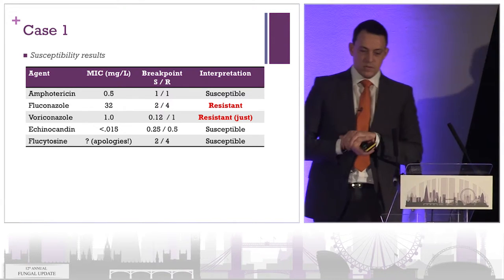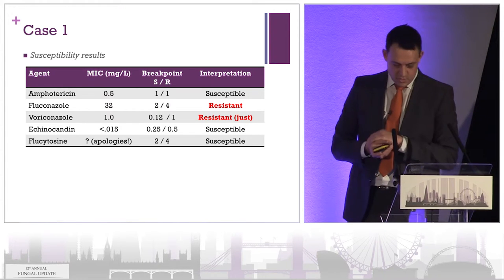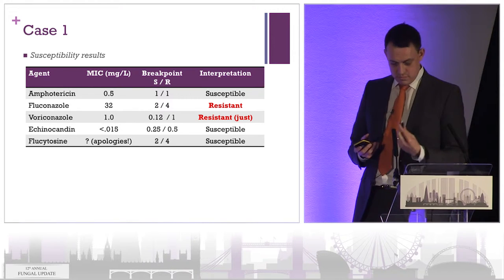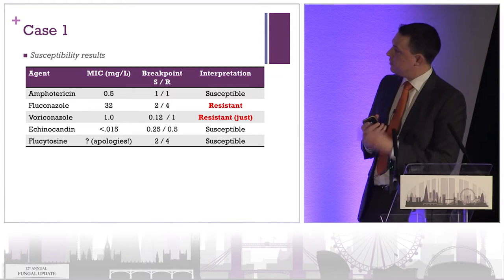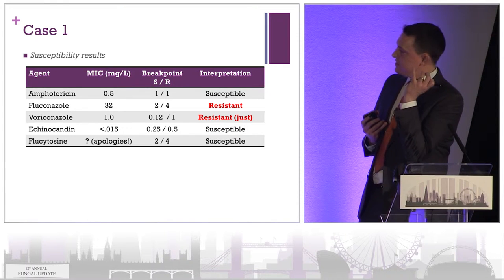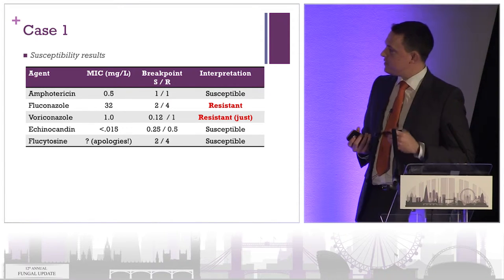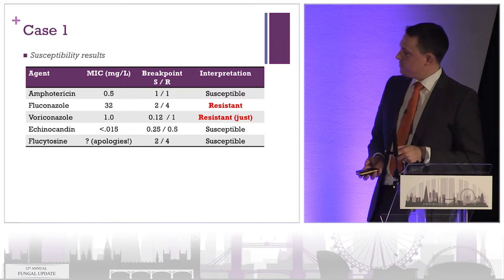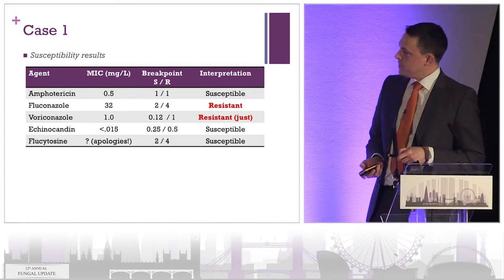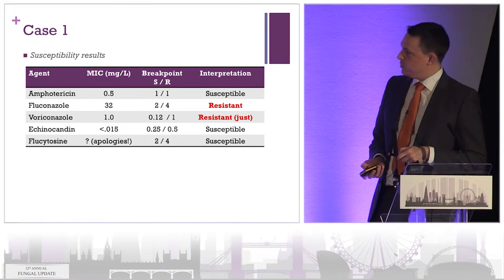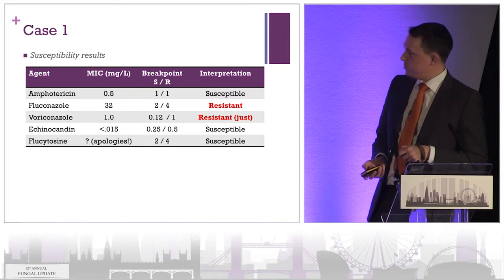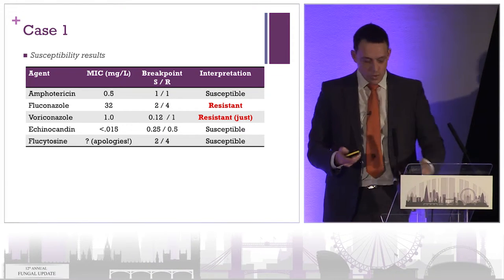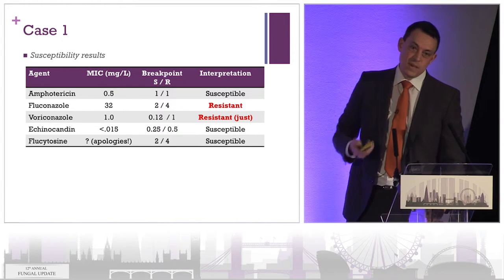We checked his susceptibility results. Amphotericin was susceptible. It was fluconazole resistant, as perhaps was anticipated. It was voriconazole resistant, but only just — with relevance later. Echinocandins were very susceptible. Flucytosine was susceptible. So we've not got a failure of treatment on the basis of resistance.